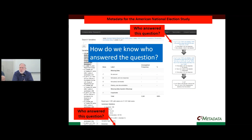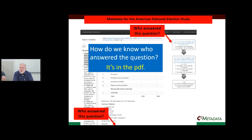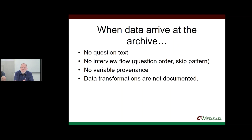Another thing we did was extend the online codebook to show how you got to a particular question — showing skip patterns or interview flow. In big surveys, every respondent doesn't answer every question. For example, your marital status determines which follow-up question you see. We tried to show the pathway through the questionnaire and explain why some people didn't answer a question. But to build this demo prototype, a staff member had to manually enter the program flow information into XML for one data set — we hit a roadblock because we don't actually get machine-actionable metadata about this.